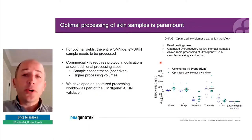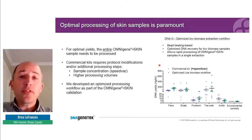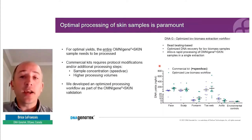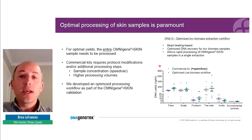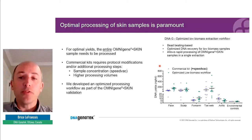One of the things we realized very early on is that optimal processing of skin samples is paramount. For optimal yields and results, you really need to process the entire OmniGene Skin sample in a single extraction. We tested commercially available kits, but the problem is that they usually don't accommodate a one-milliliter input volume. So we had to do bead concentration of the sample to lower the overall volume, or modify the protocol to accommodate larger input volumes — and none of these approaches were really ideal.